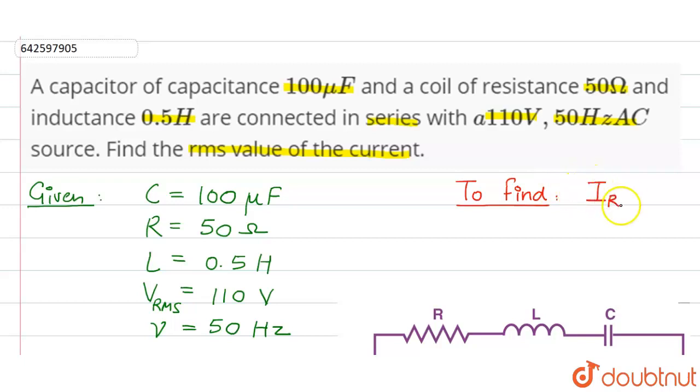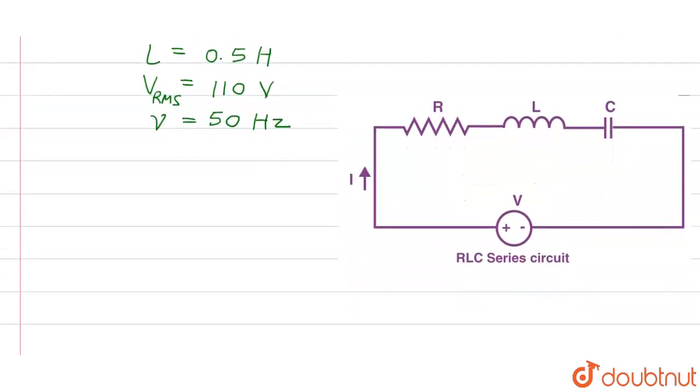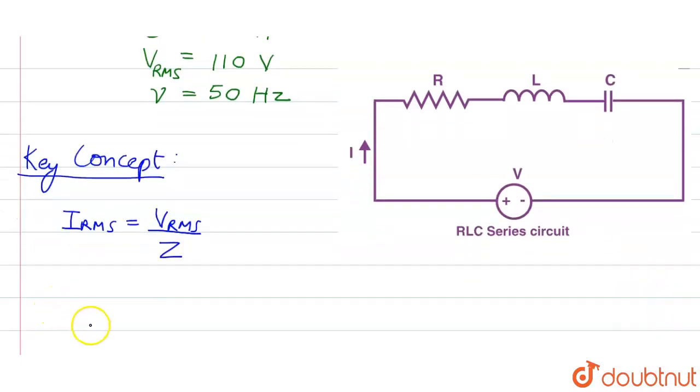Before we solve this question, let us first discuss the key concept that we need to know. The formula for I_RMS is given as V_RMS divided by the total resistance of the circuit. In our case it is impedance. This is given from Ohm's law. Here we need to find Z because we are already given V_RMS.